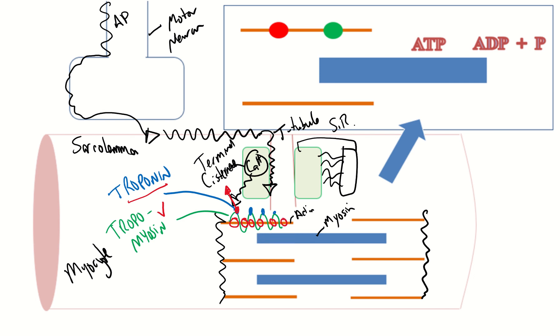So at this point the myosin heads will be able to interact with these myosin binding sites to create cross bridges and these cross bridges are going to allow contraction of the sarcomeres and basically bring the actin in and the actin is going to slide over the myosin.